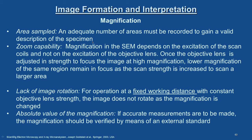Only by examining an adequate number of areas can you say that you have imaged the specimen with a reasonable representation of bulk information. Collecting only very high magnification images in one or two locations may not represent the bulk information. Regarding zoom capability: magnification in SEM depends on the excitation of the scan coils, not the objective lens. Once the objective lens is focused at high magnification, low magnification of the same region remains in focus as the scan area is increased.